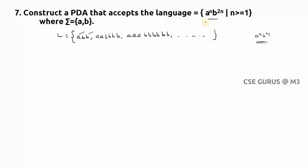You may think: whenever you get a, push it, and for two b's pop one a. That seems possible, but I'll go with an easier approach. Whenever I get a single a, instead of pushing one a, I'll push two a's. So if I get three a's, I'll push six a's into the stack. That way, the number of symbols in the stack equals 2n, matching the number of b's.